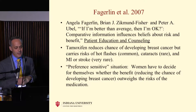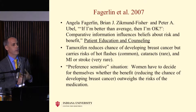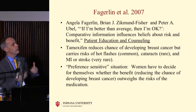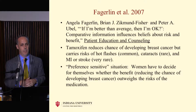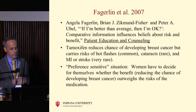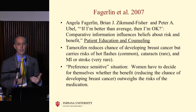Here's the case. Tamoxifen reduces the chance of developing breast cancer — it's a prevention treatment for people at elevated risk. However, it carries a risk of hot flashes, which are very common; cataracts, which occur but are rare; and heart attacks and strokes, which are very rare but happen. This is considered a truly preference-sensitive decision — one where clinical judgment gives it to the patient to decide. Women in the group whose risk is high enough have to decide for themselves whether the benefit of reducing breast cancer risk outweighs all those risks. The provider should not choose for the patient.